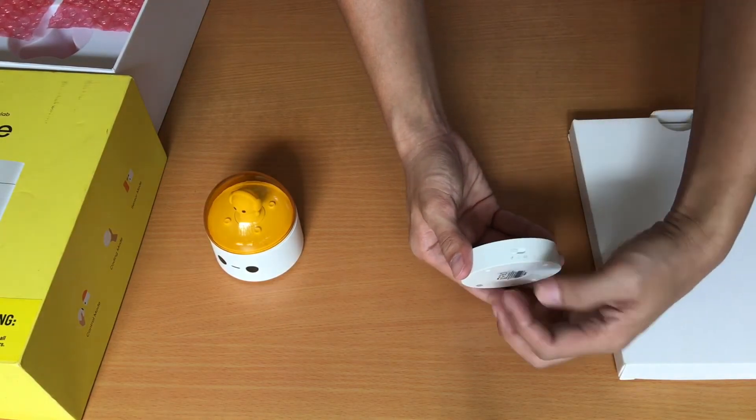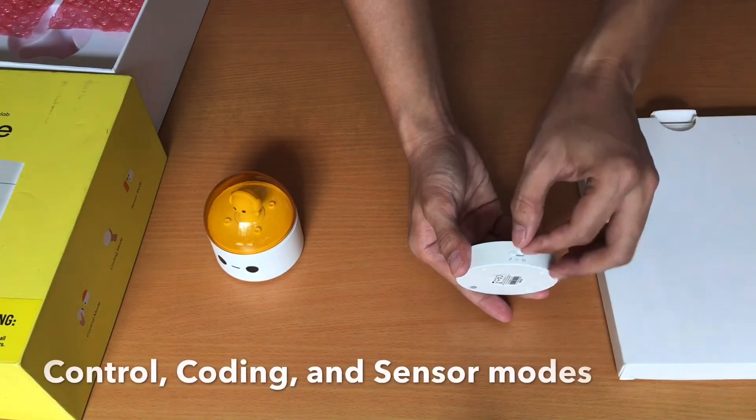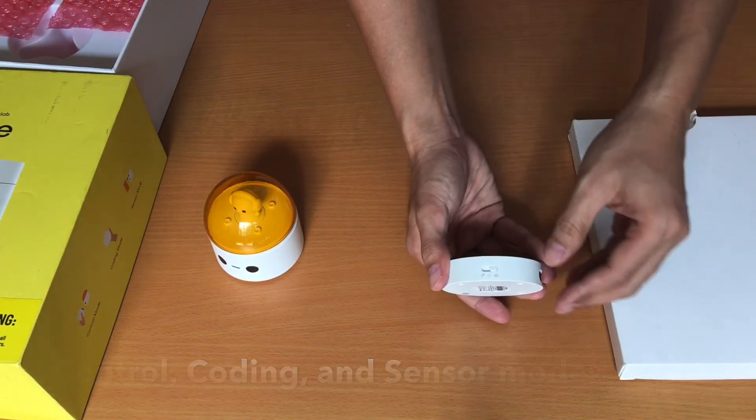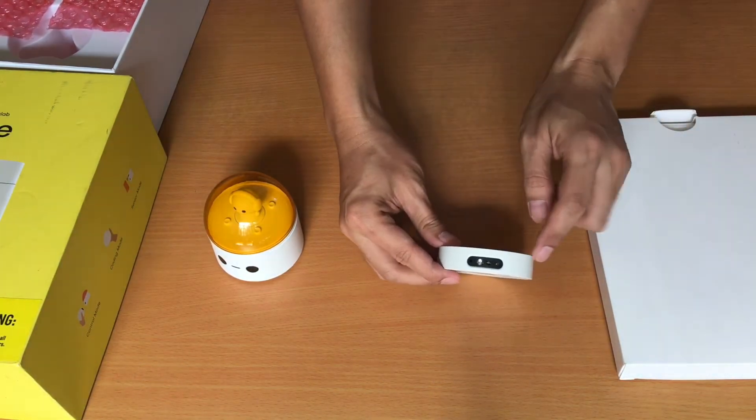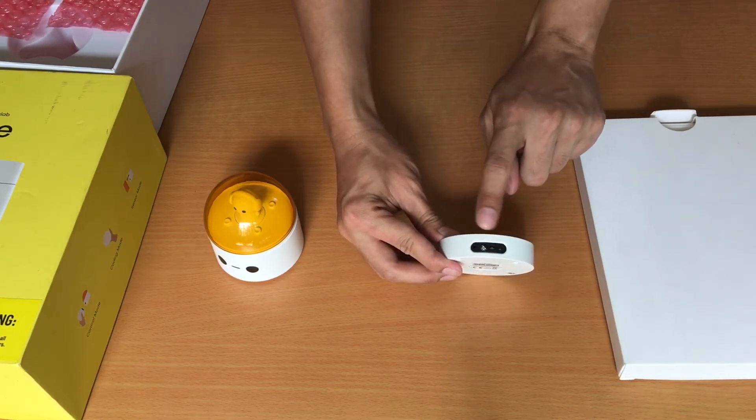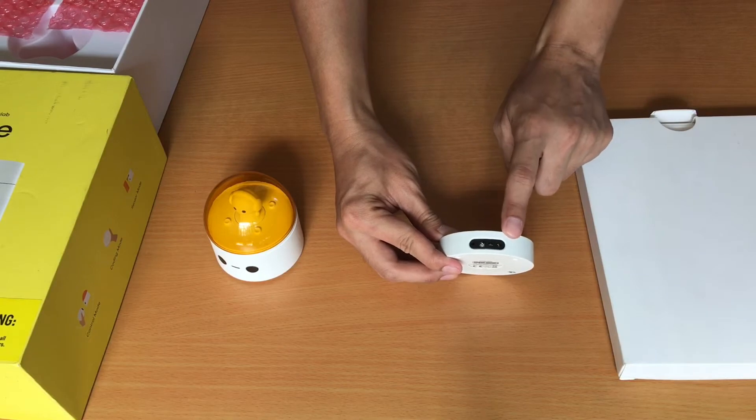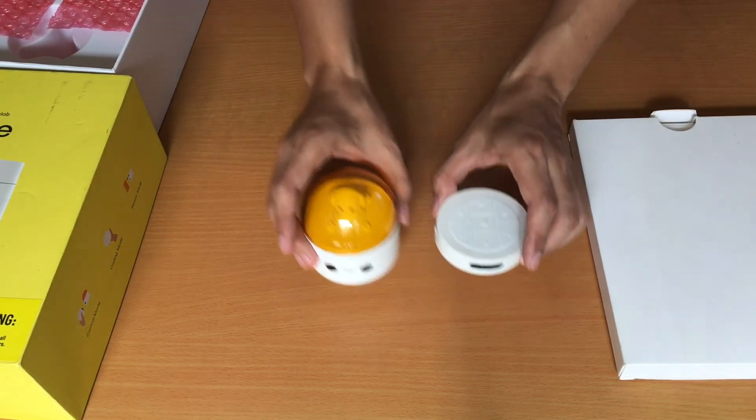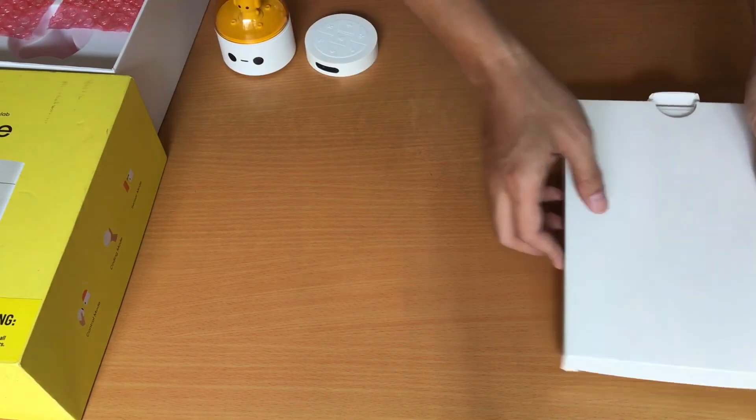The first one is the control mode. And the second one is the coding mode. And the third one is the sensor mode. It also has a sensor here which detects color, distance and light. Let's set this aside for a moment and I'll show you the other things including the box.